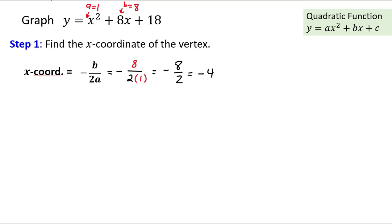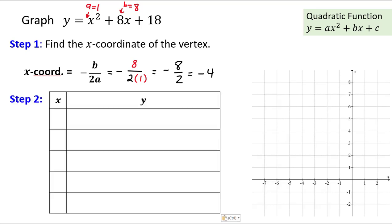With step one complete, we move to step two: organizing our work in a table. Since we found the x-coordinate of the vertex, we place it in the middle of the x-column of the table. That's where -4 goes, leaving two empty spaces above and two empty spaces below it for the other four points.